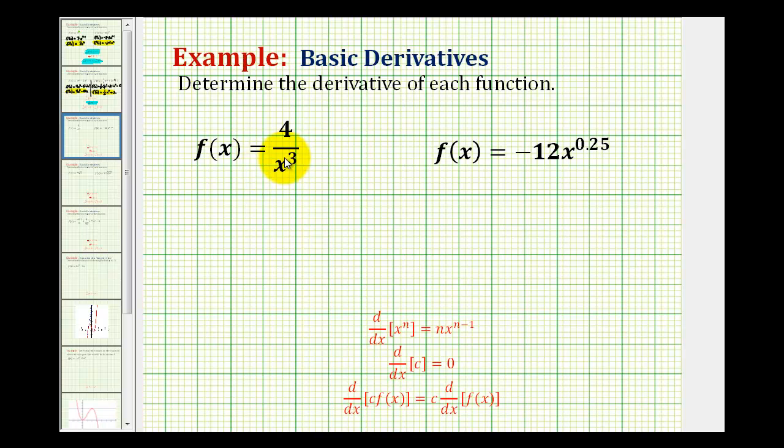We want to determine the derivative of each function using the power rule stated here. The derivative of x to the power of n is equal to n times x to the power of n minus one.